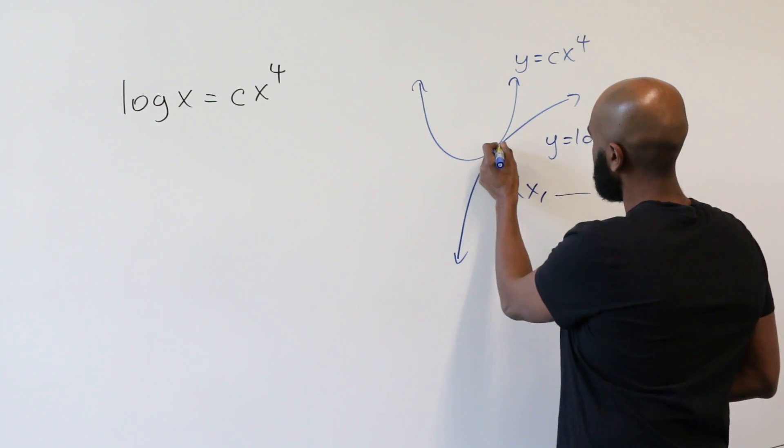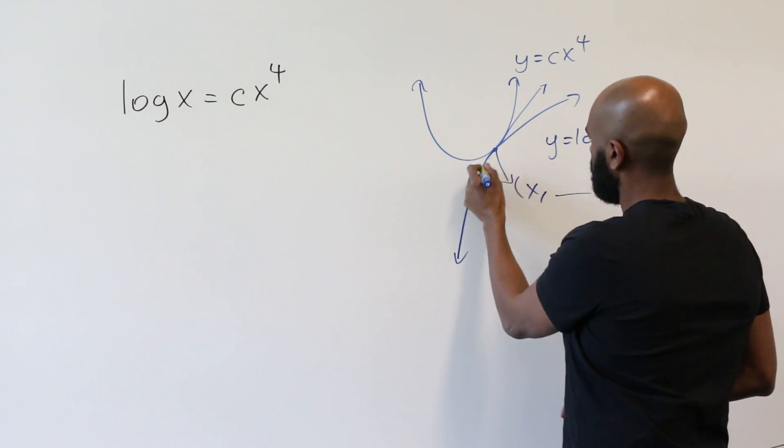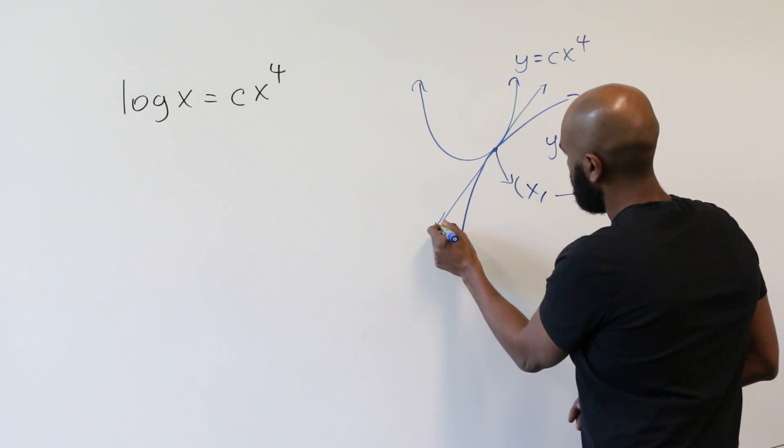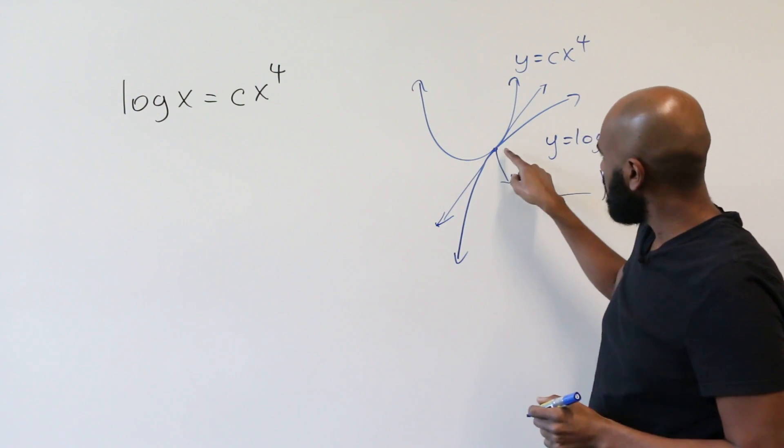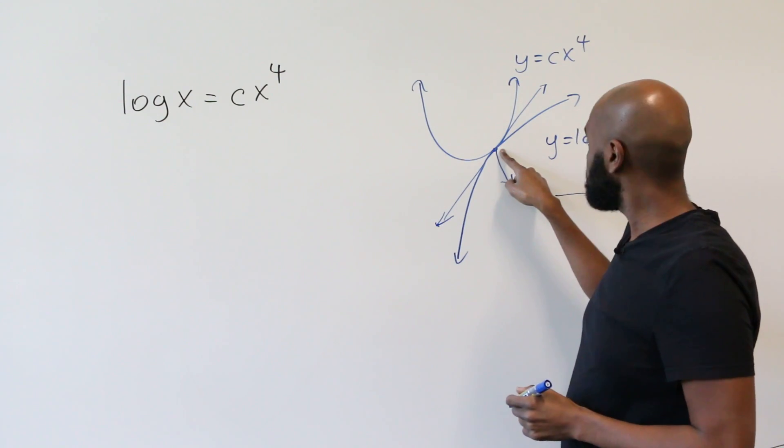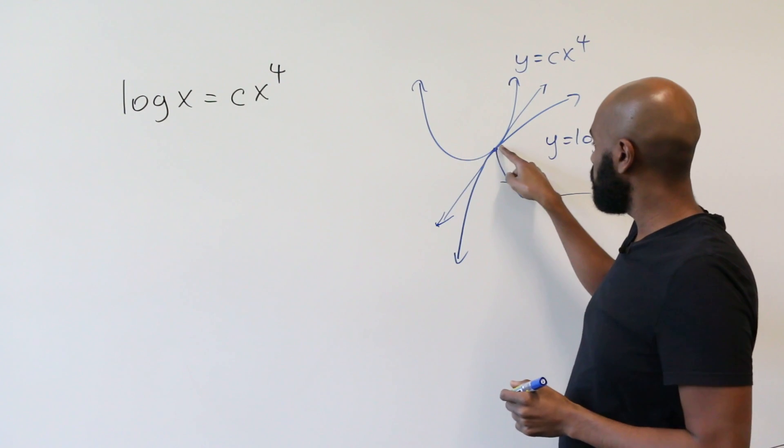If we look at the tangent line here, you notice that the slope of the tangent at this point, actually the tangent line itself, has to be the same for the two functions.